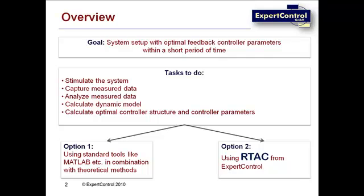When we talk about feedback control design, the main goal is to realize an optimal closed-loop behavior even if setpoint changes happen and disturbances occur. To achieve this goal in a time-efficient way, an optimal open-loop system setup with optimal feedback controller parameters is needed, and this goal should be achieved within a short period of time.